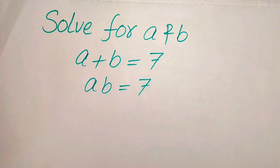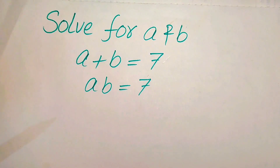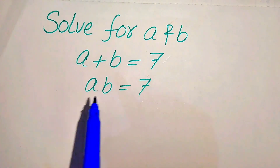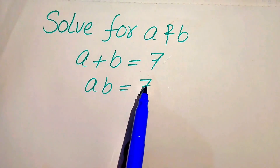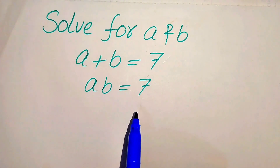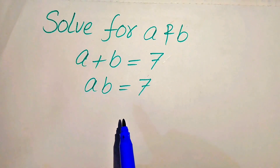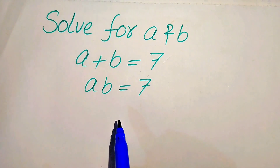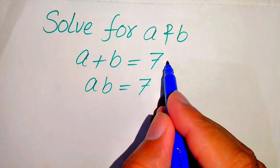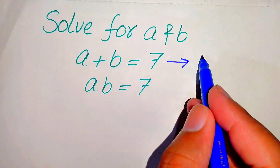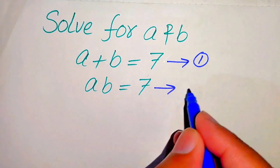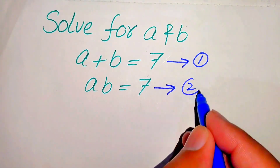Hello everyone. How to solve this problem for the values of A and B if we have A plus B equals 7 and AB equals 7. We call this equation number 1 and this equation number 2.